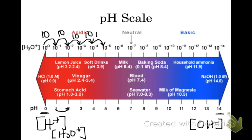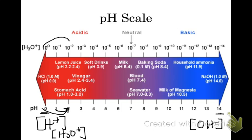Some questions might ask: what is the change in concentration when you go from a pH of 0 to 2? Going from 0 to 2, we're decreasing the H₃O⁺ concentration by two factors of 10. We multiply — not add — so 10 times 10 is 100. Going from pH 0 to 2 decreases the H₃O⁺ concentration by a factor of 100, and in turn increases the OH⁻ concentration by a factor of 100.